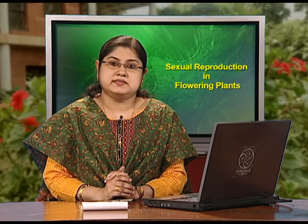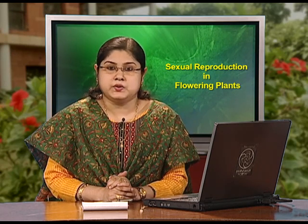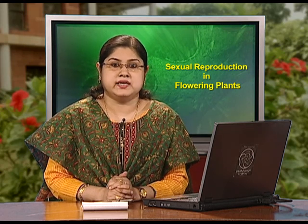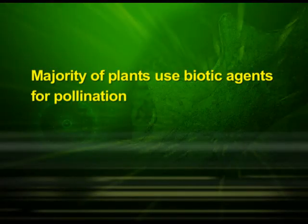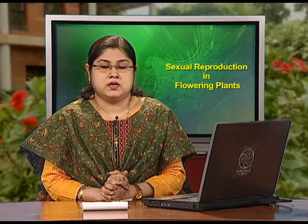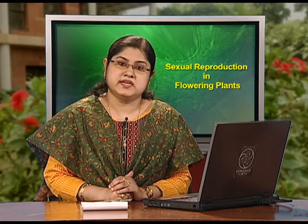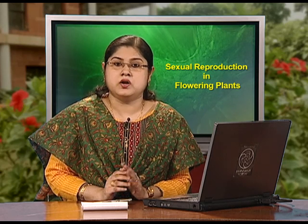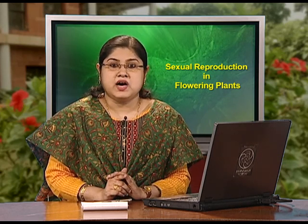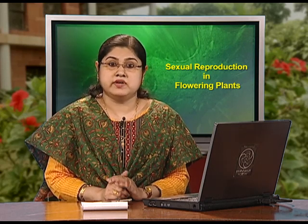Now let us discuss the agents of pollination. Plants use wind and water as abiotic agents and animals as biotic agents to achieve pollination. Majority of plants use biotic agents, while only a small proportion use abiotic agents. Pollen grains coming in contact with the stigma is a chance factor in both wind and water pollination. To compensate for these uncertainties and associated loss of pollen grains, flowers produce enormous amounts of pollen compared to the number of ovules available for pollination.